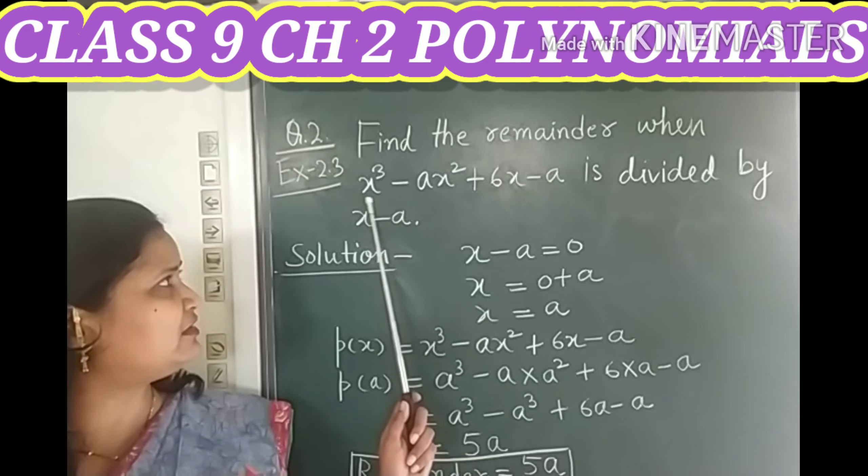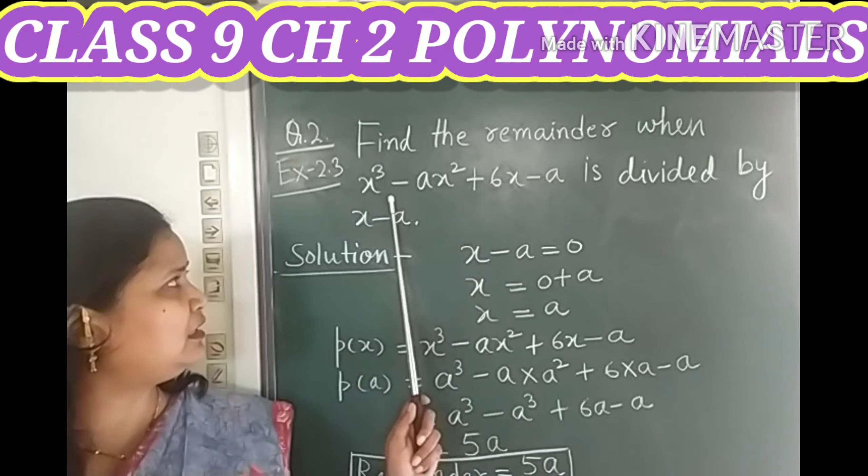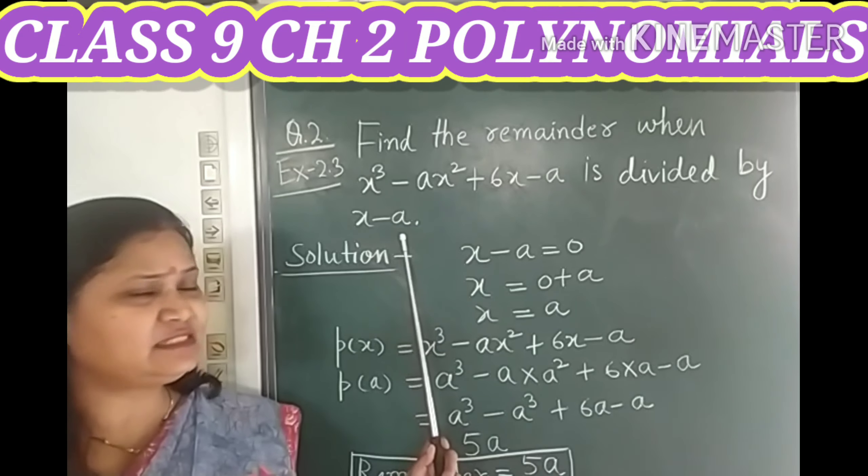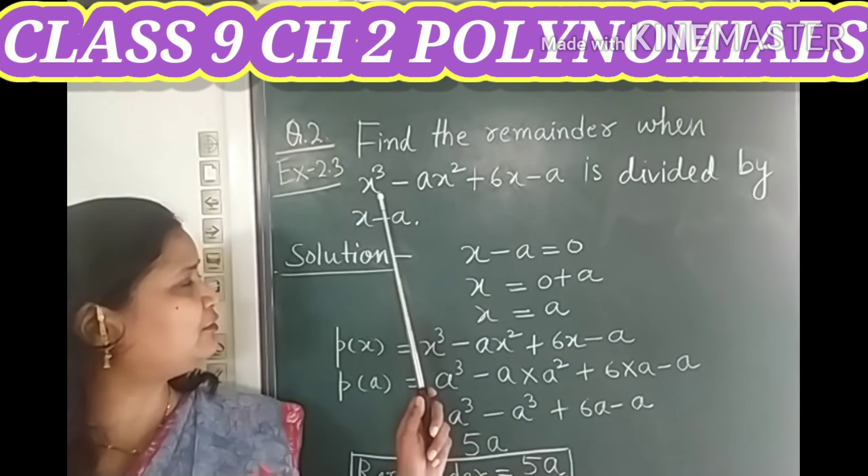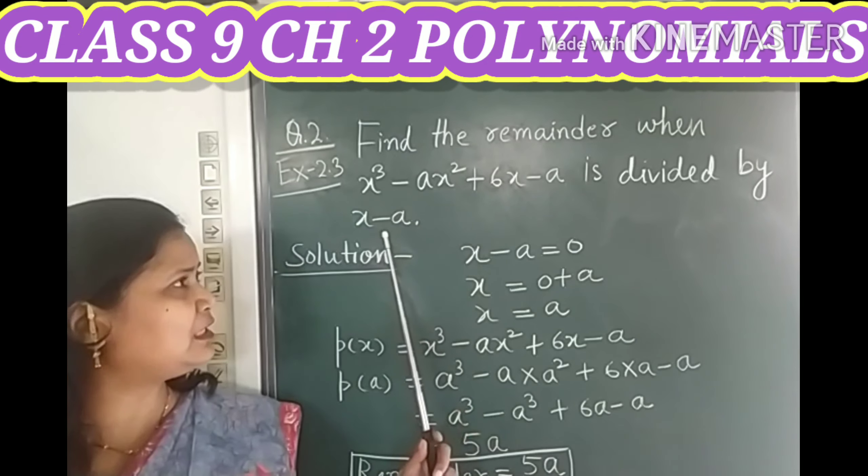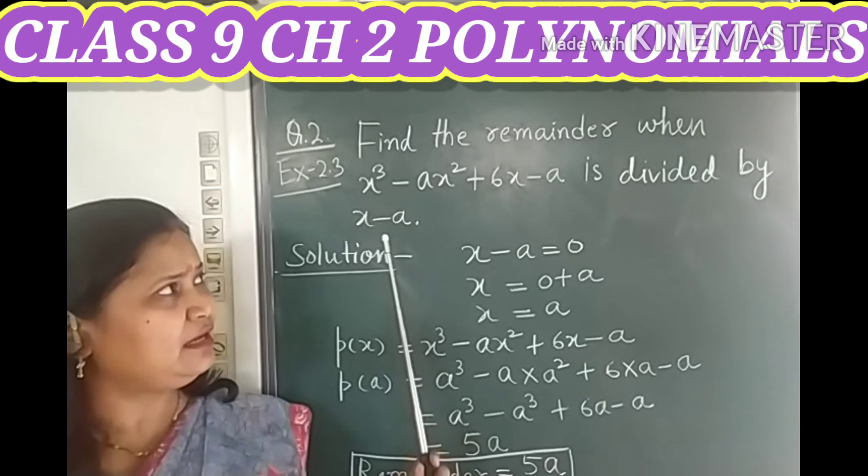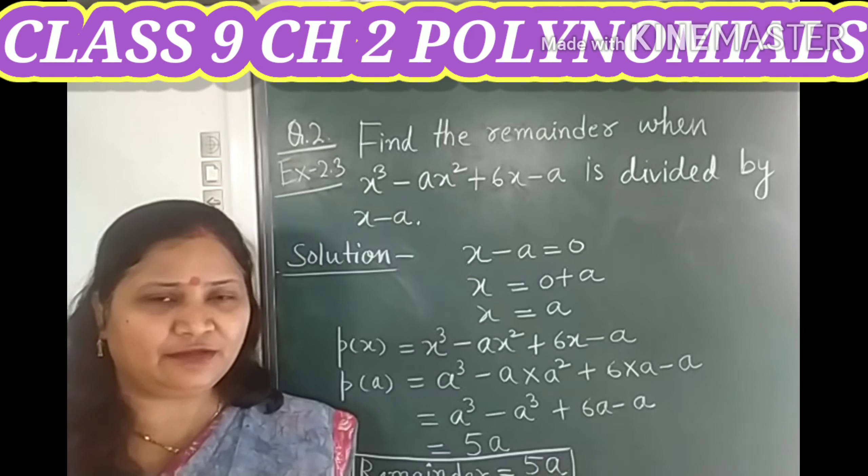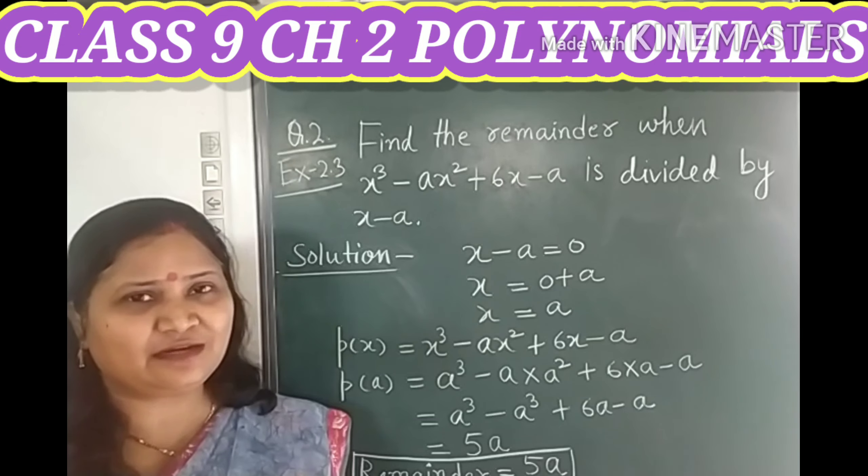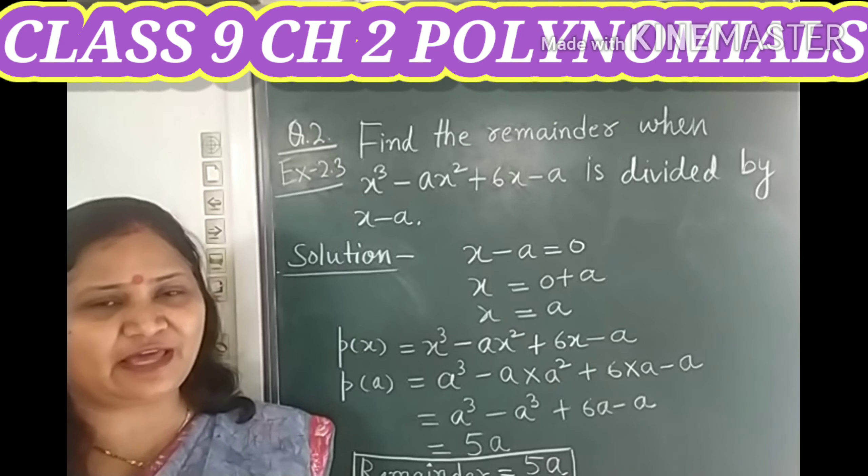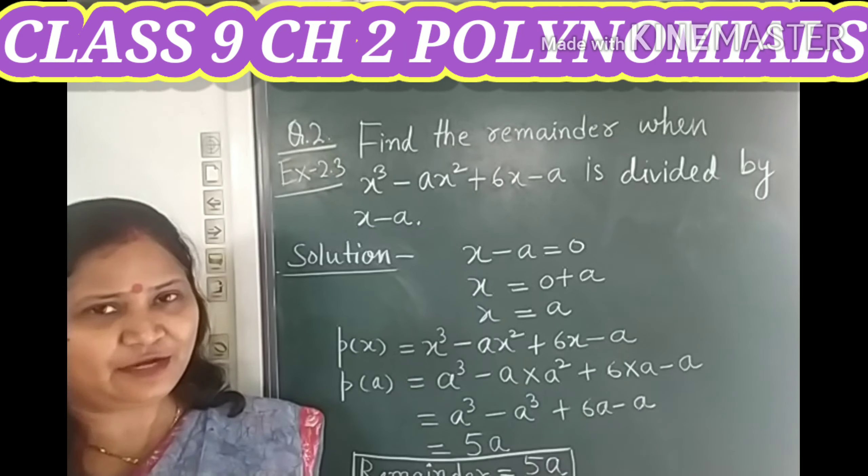We are given two polynomials. First is this cubic polynomial and another is this linear polynomial. We are to divide this cubic polynomial by this linear polynomial and we are to find the remainder only. So children, we can solve this question very easily by using remainder theorem.